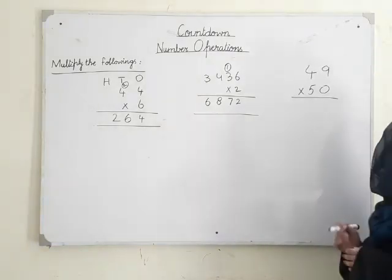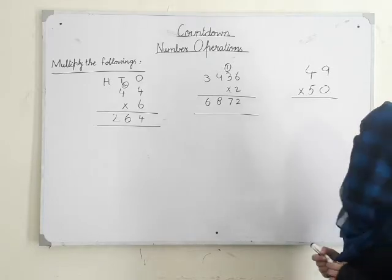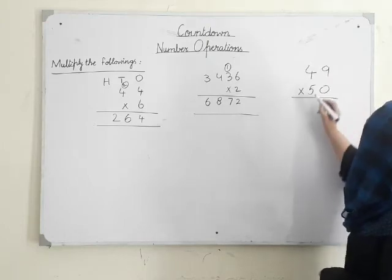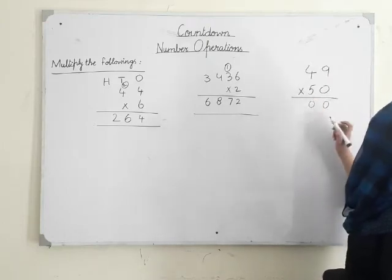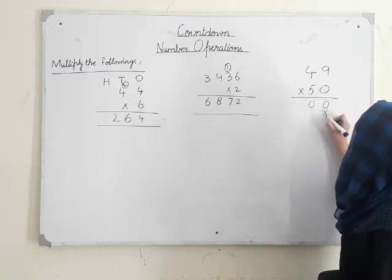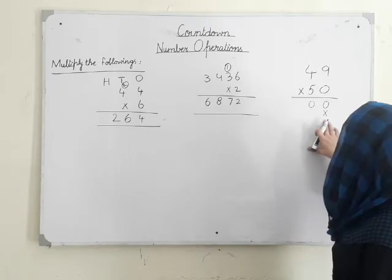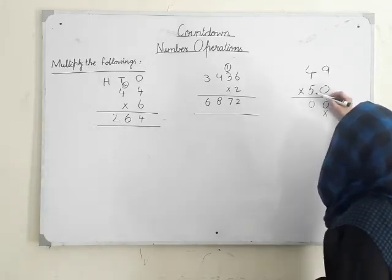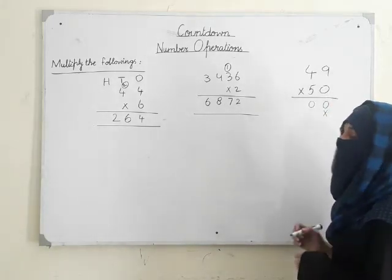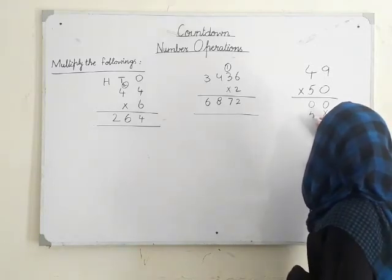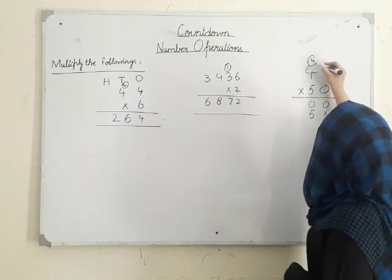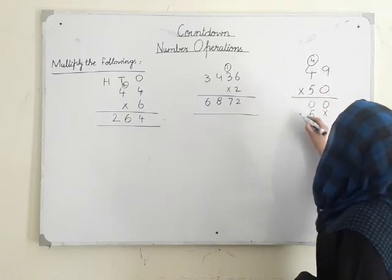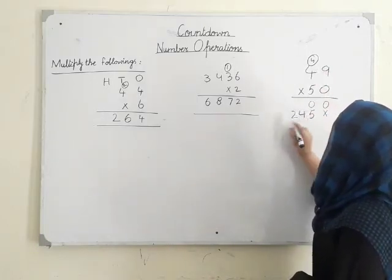We have two numbers which have zeros. What do we do? First number we have, cross it. Next, again then, 5 times 9 is 45. 5 and 4. 5 times 4 is 20, 24.